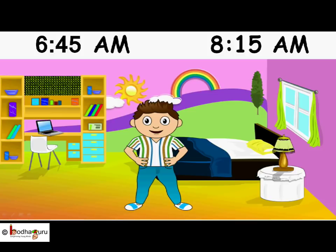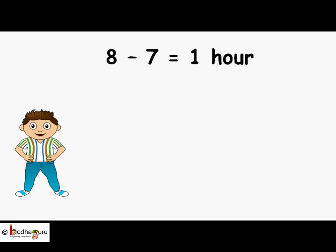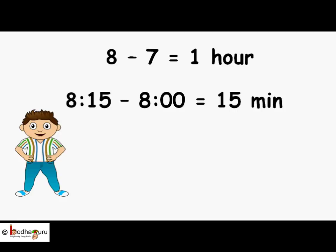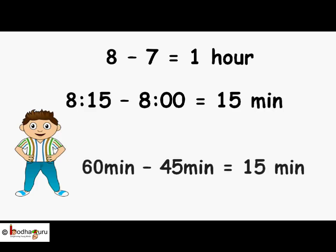First, we calculate hours. After 6:45 comes 7, so 8 minus 7 is equal to 1 hour. Now we calculate minutes. 8 to 8:15 means 15 minutes, and now calculate minutes between 6:45 to 7. We know 1 hour is equal to 60 minutes.